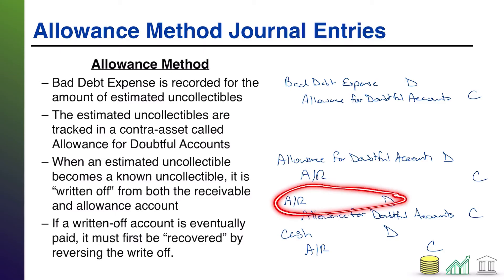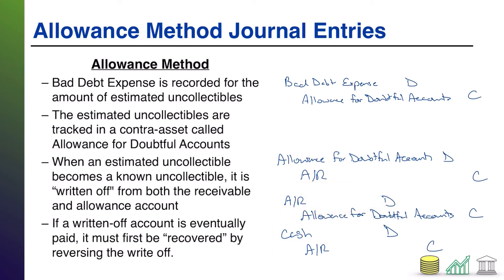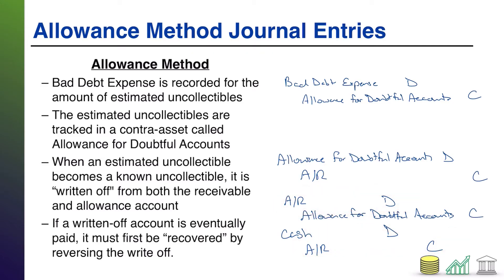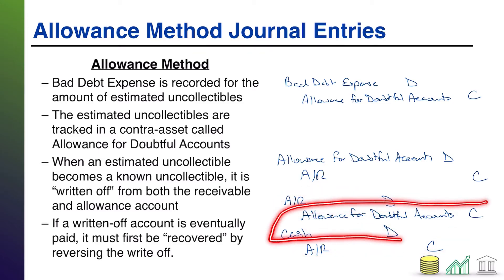Now the AR is still on the books and now we can collect it. This process is known as a recovery — you recovered a previously written-off account. One question students often ask: you debited AR and you credited AR — would it be okay to simply record debit cash, credit allowance? The answer is yes, that is technically okay because it gets you to the same end goal.